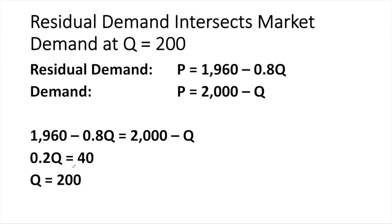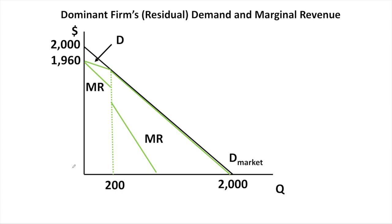The residual demand in quantity form is Q equals 2,450 minus 1.25P. Solving for P gives the inverse residual demand curve: P equals 1,960 minus 0.8Q. When solving these models, it's useful to know where the residual demand curve intersects the market demand — that occurs at a quantity of 200, found by setting 1,960 minus 0.8Q equal to 2,000 minus Q.